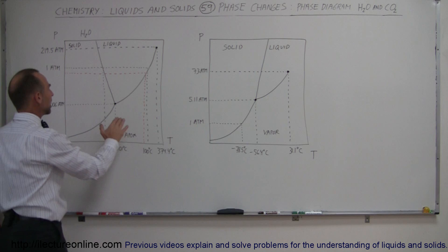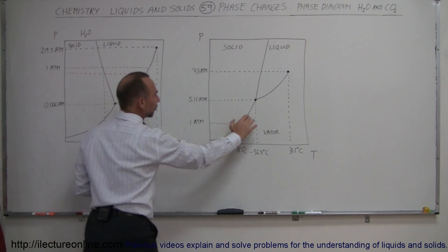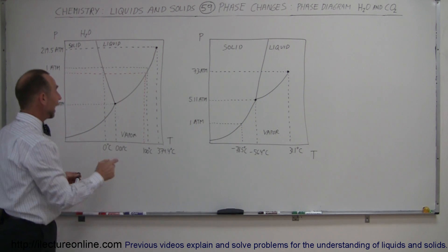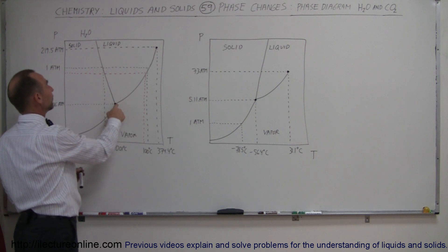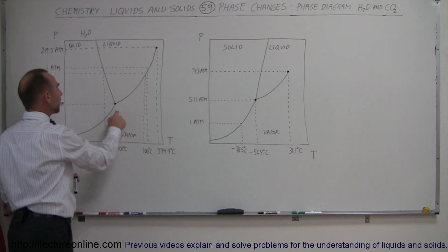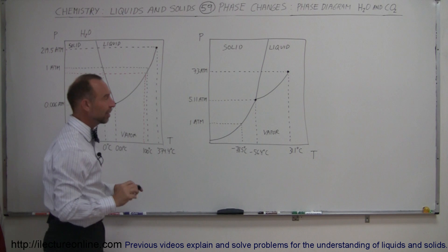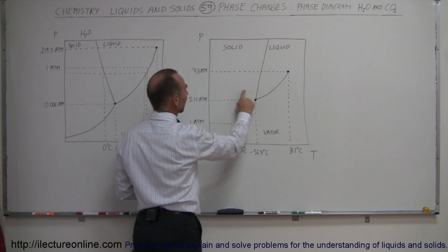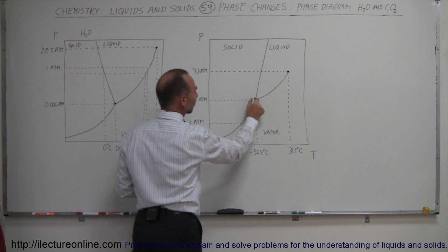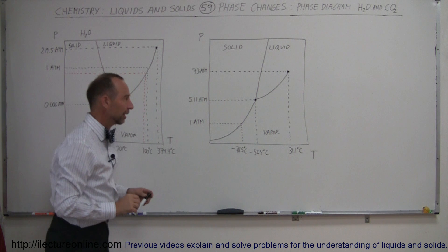Both of them have a triple point. Right here is the triple point for water. There's the triple point for carbon dioxide. At those points, all three phases - solid, liquid, and vapor - can exist at the same time in the same container. Here, all three phases can exist at the same time in the same container right there.